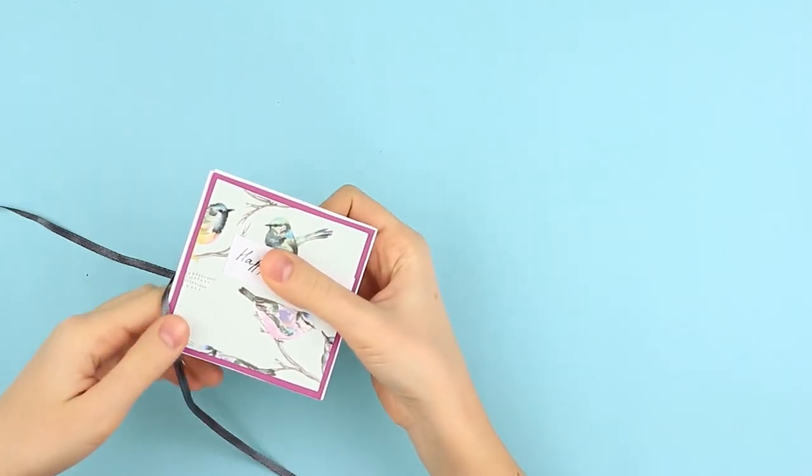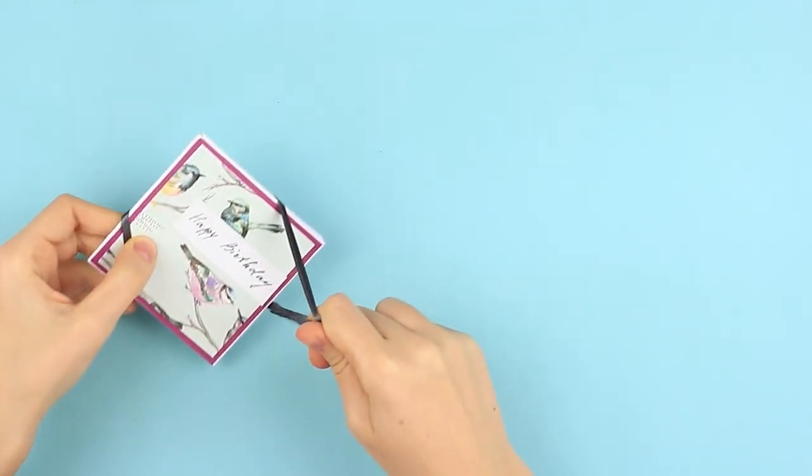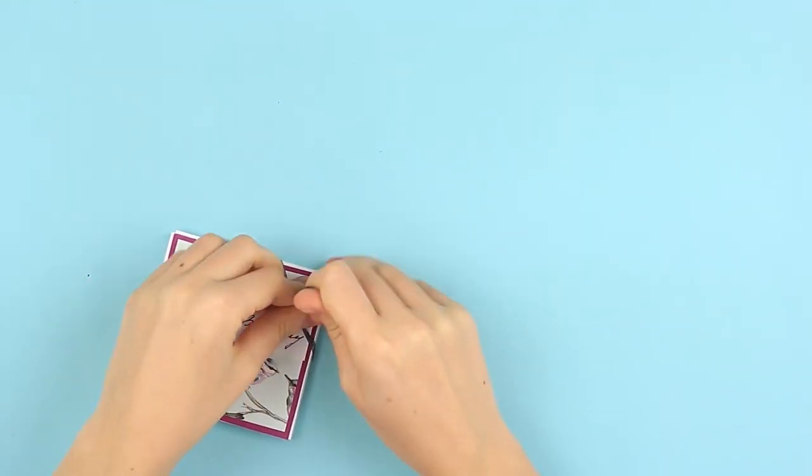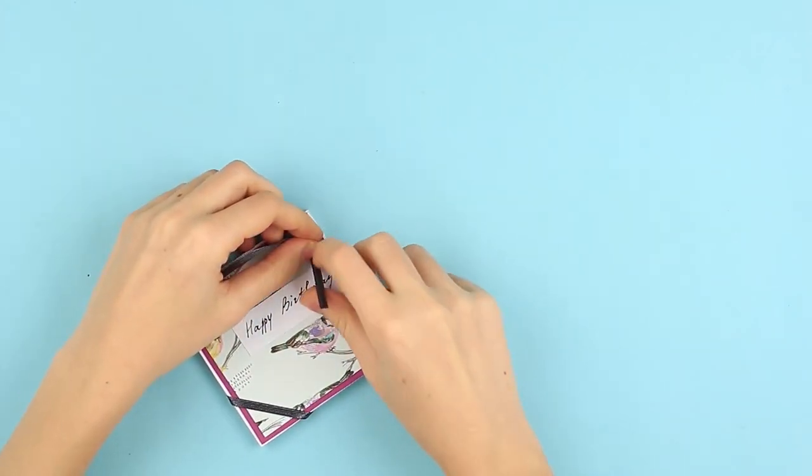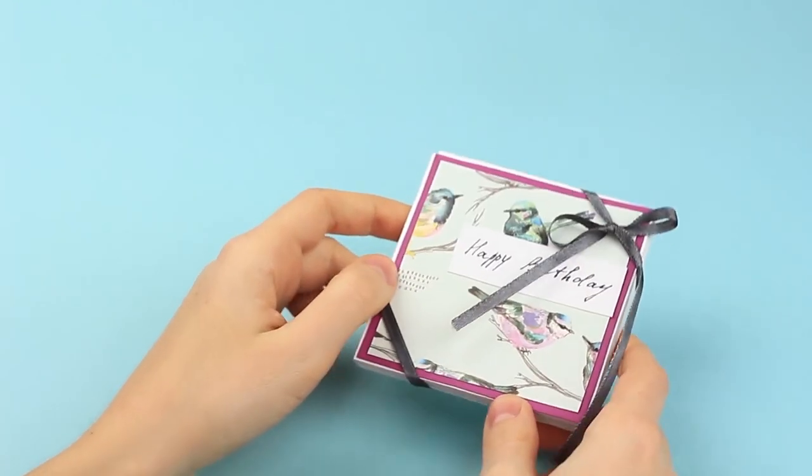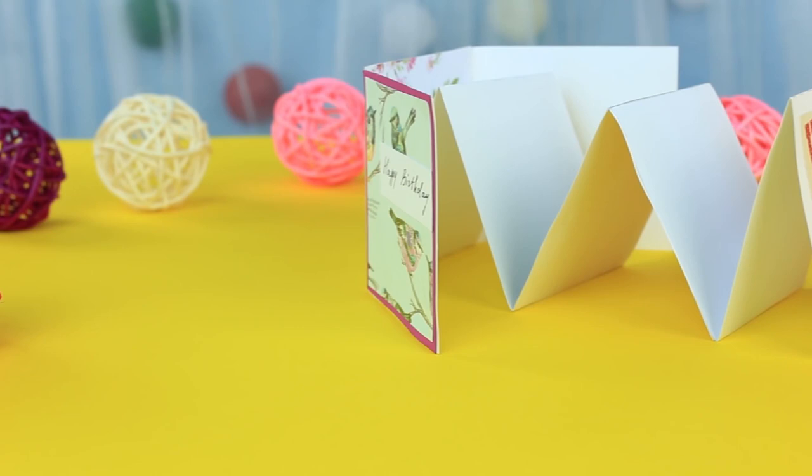The ribbon always looks festive as gift wrapping. Let's add it to the scrapbook. Wrap the corners to cross the ribbon on the back. Tie a bow. Add several photos for the birthday person and your wonderful handmade scrapbook will become a pleasant birthday gift.